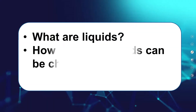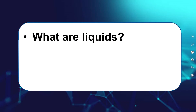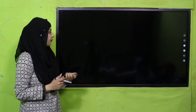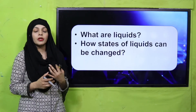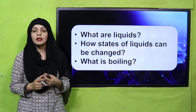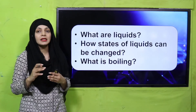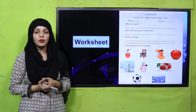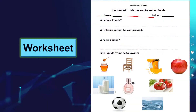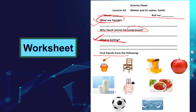Evaluation: What are liquids? Liquids is anything that can flow and takes the shape of the container. How can the state of liquid be changed? By putting it on heat. What is boiling? At a certain temperature, when a liquid turns into gas, that temperature is called boiling. For practice, you can download this worksheet from the description box below this video, or get it in print form from your teacher. Write down your name and roll number. Why can liquids not be compressed? Because their particles are close to each other. Circle all the liquids from the following — honey is a liquid, circle it like this.